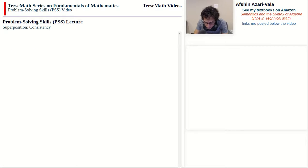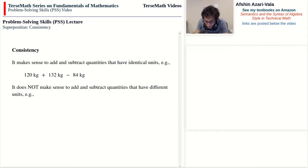Consistency has to do with the units of these terms. Now it does make sense for me to add and subtract quantities that have identical units. As an example, it does make sense for me to add 120 kilograms, 132 kilograms, and then subtract 84 kilograms. However, it does not make sense to add and subtract quantities that have different units. As an example, it does not make sense for me to do 25 meters plus 15 grams minus 18 seconds. And we call an equation consistent if all the terms in that equation have identical units.